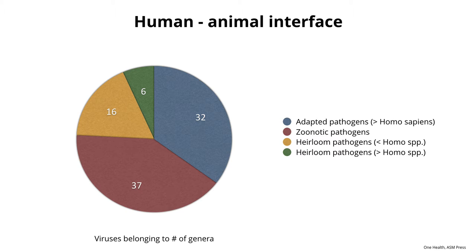Here's an interesting pie chart in which individuals attempted to look at all the viruses around today that infect humans and ask roughly when they entered the human population. There are four classes, color-coded. In blue are 'adapted pathogens' — these came from an animal into Homo sapiens at some point, mostly in the last 11,000 years, became adapted, and are with us today. HIV, measles virus, and poliovirus are examples — there are 32 genera fitting this bill.